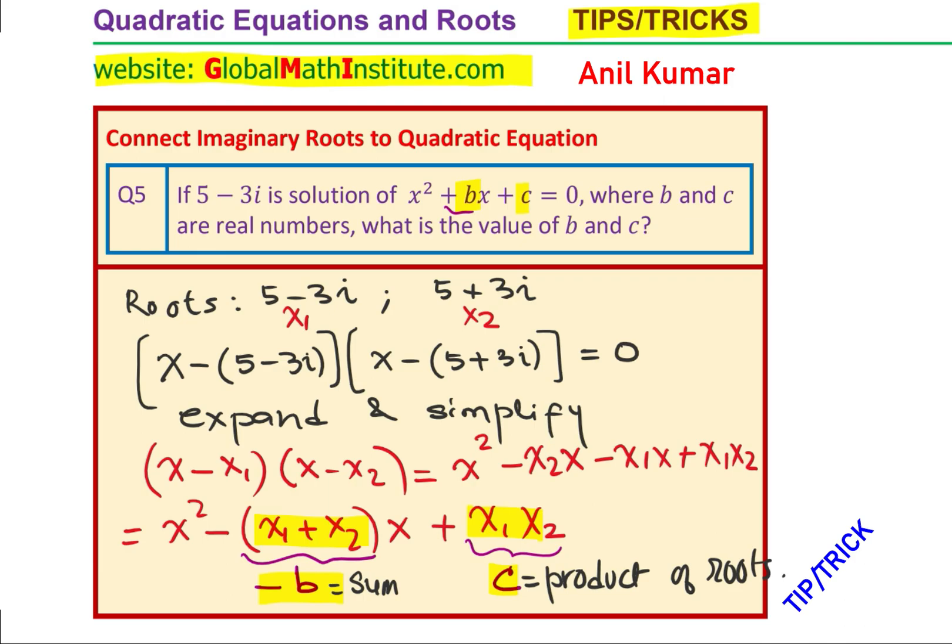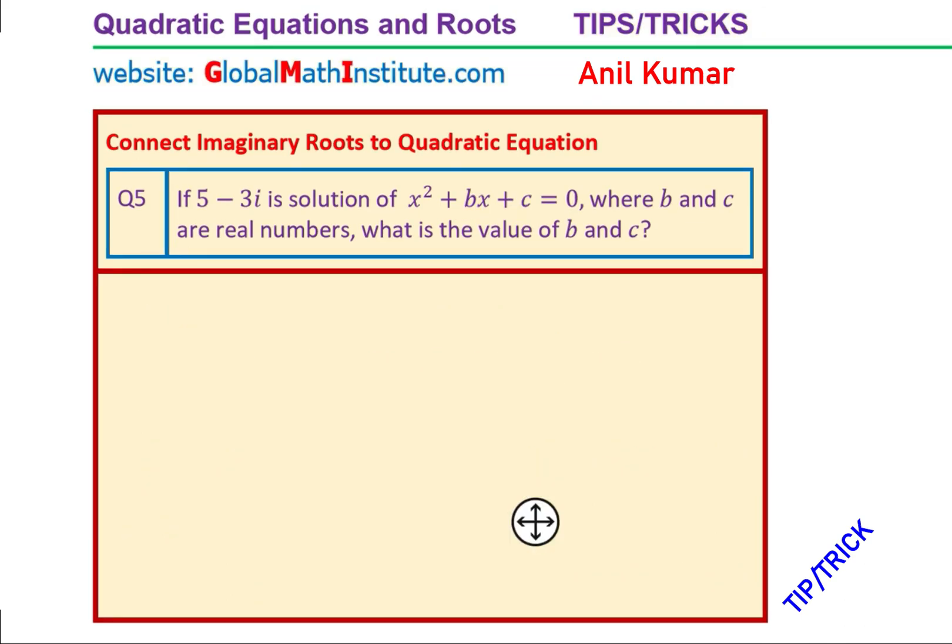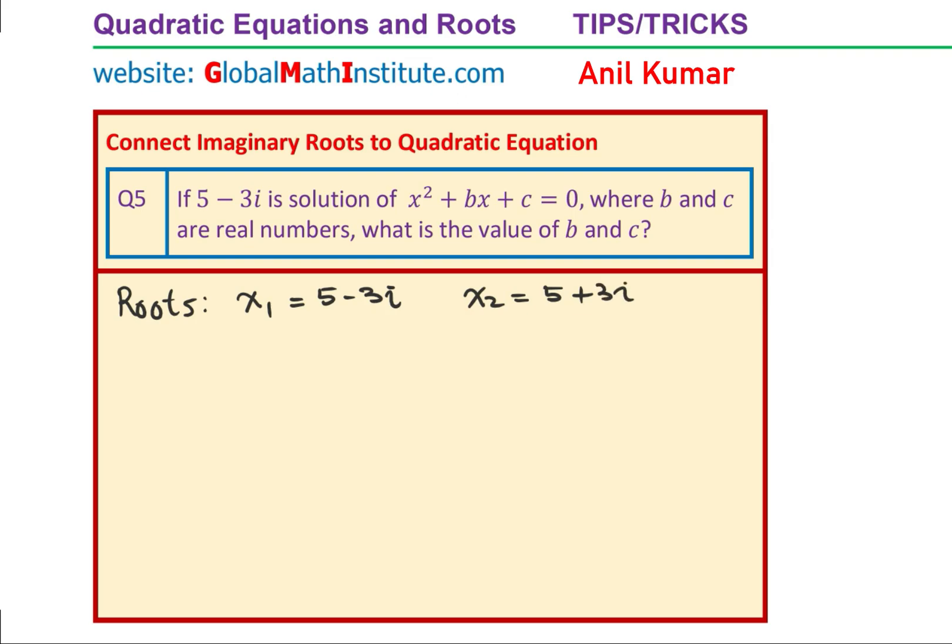Now, appreciating this, you can now understand that I really do not have to expand and simplify. I can find the value of b and c just by using this concept of sum and product, and that is what we are going to do. You can always verify the result using expansion. So, once again, what we have here is the roots: x1 equals to 5 minus 3i and x2 as 5 plus 3i. Always we have conjugate roots where we are talking about complex roots.